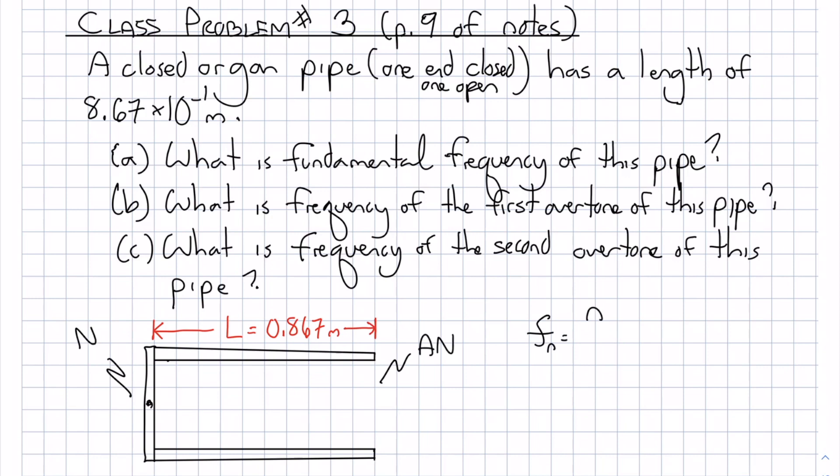fn will be nv over 4L, where n can only be 1, 3, 5, 7, etc. Odd numbers.